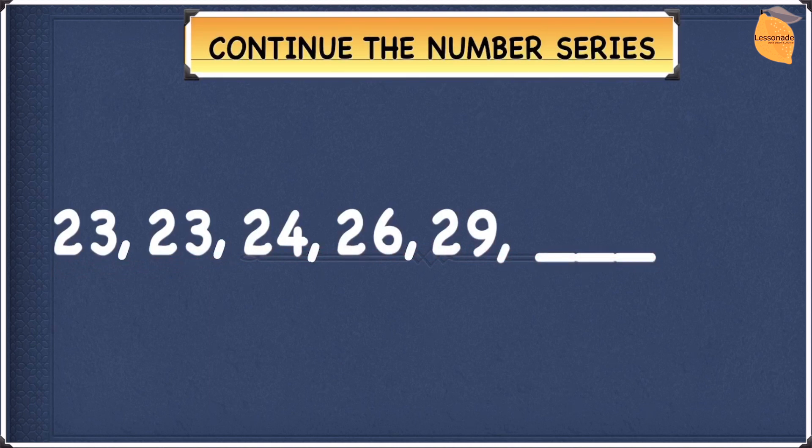The numbers we have in this series are 23, 23, 24, 26, and 29. Let's see what we have to do to 23 to get to 23. Well, there's not really much we can do. We can just add 0 to give us 23.